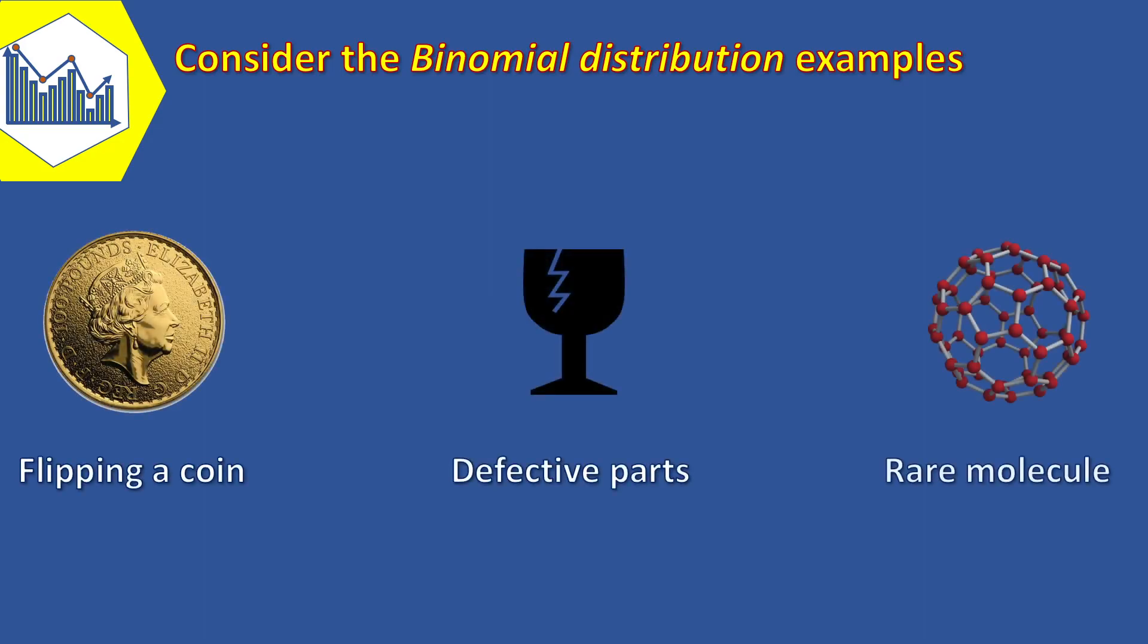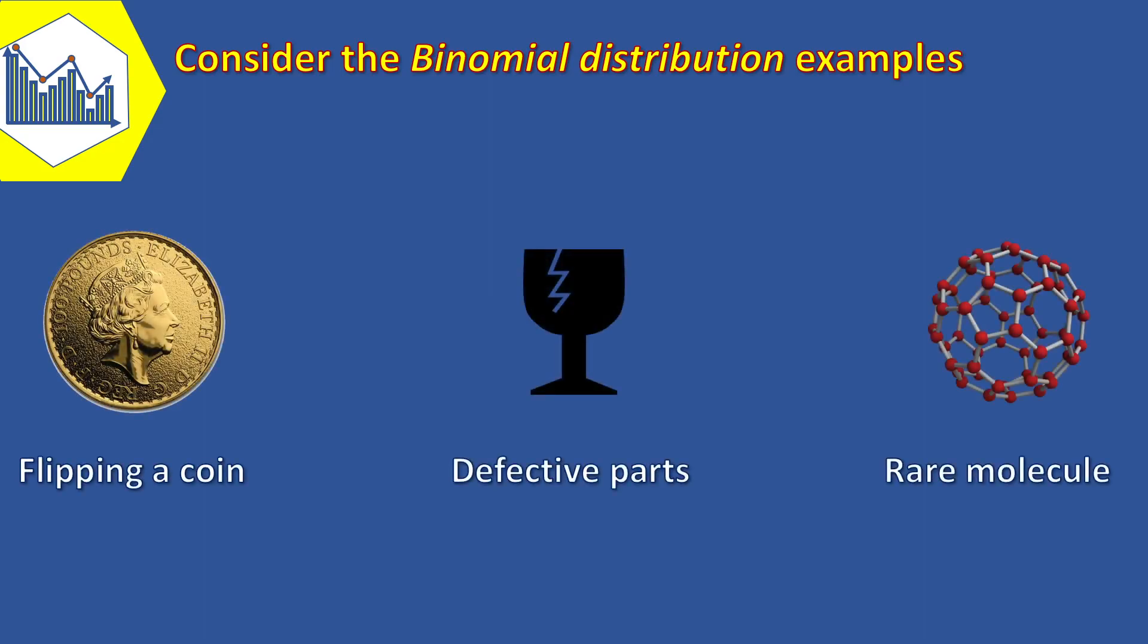Consider a random experiment that is closely related to the one used in the definition of binomial distribution. Again, assume a series of Bernoulli trials. I mean independent trials with constant probability p of success on each trial. However, instead of a fixed number of trials, trials are conducted until success is obtained.